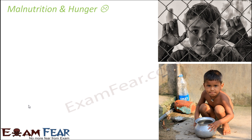But still we see a lot of hunger and malnutrition. Malnutrition is the scenario where the right amount of nutrition is not received by the body. When a child doesn't receive the right amount of nutrition, it results in diseases and the child tends to become weak. The question is: when we have so many varieties of food items, why do we still have hunger and malnutrition?